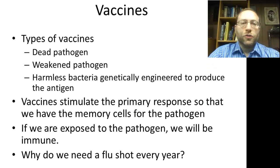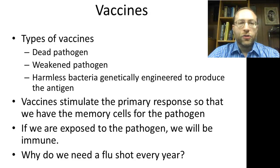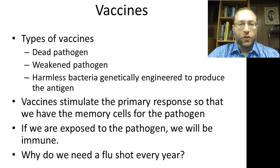There are other ways to become immune without getting sick first. Vaccines allow us to do that. There are basically three types: you can be injected with a dead pathogen, a weakened pathogen, or a harmless bacterium that's genetically engineered to produce the antigen — like the hepatitis B vaccine, where a bacterium produces the antigen that our immune system responds to.